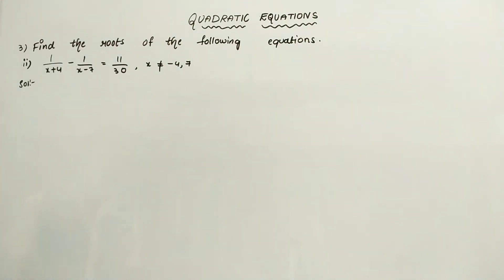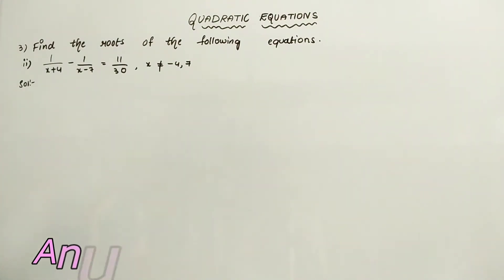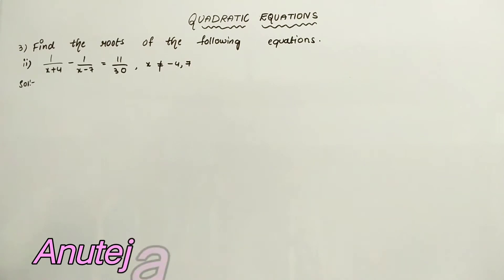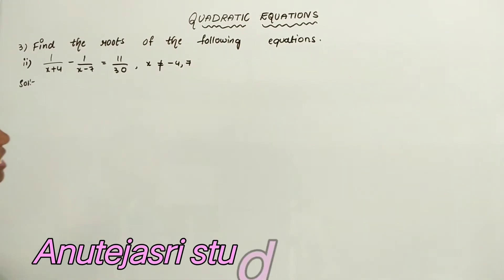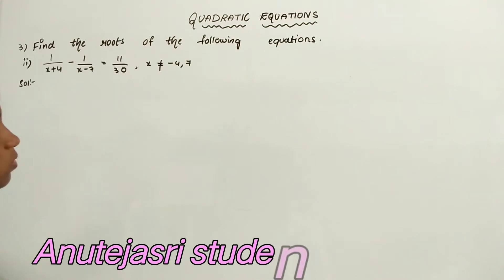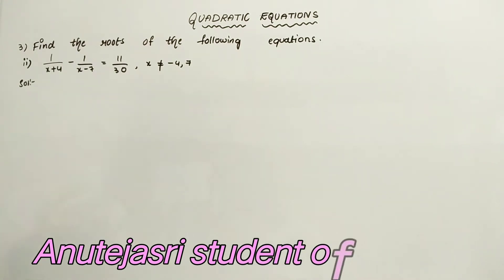Find the roots of the following equations. Now we are doing the second sum: 1 by x plus 4 minus 1 by x minus 7 is equal to 11 by 30, where x is not equal to minus 4 or 7.